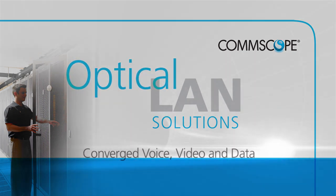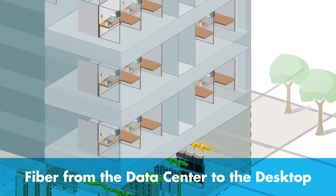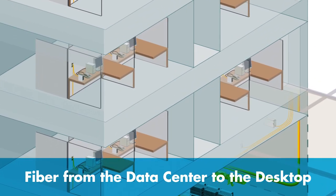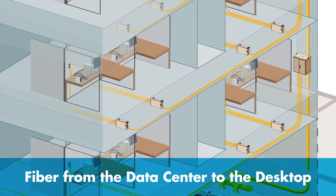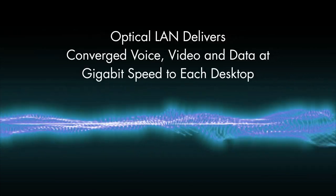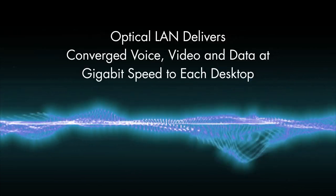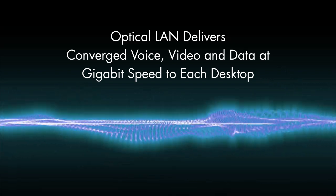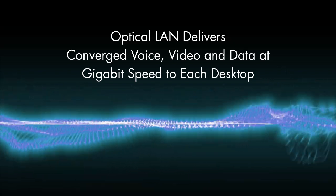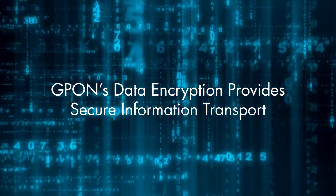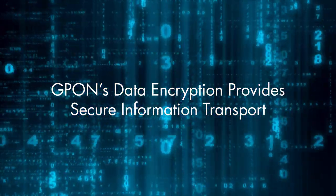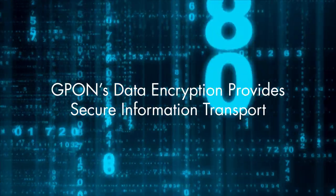Using the same passive optical network technology as CommScope's leading fiber-to-the-premises product portfolio, Optical LAN takes a single strand of single-mode fiber from the data center all the way to the individual user. The Optical LAN's GPON architecture is capable of delivering converged voice, video and data at gigabit bandwidth levels to each desktop. And, with GPON's sophisticated data encryption capabilities, it provides secure information transport between users.